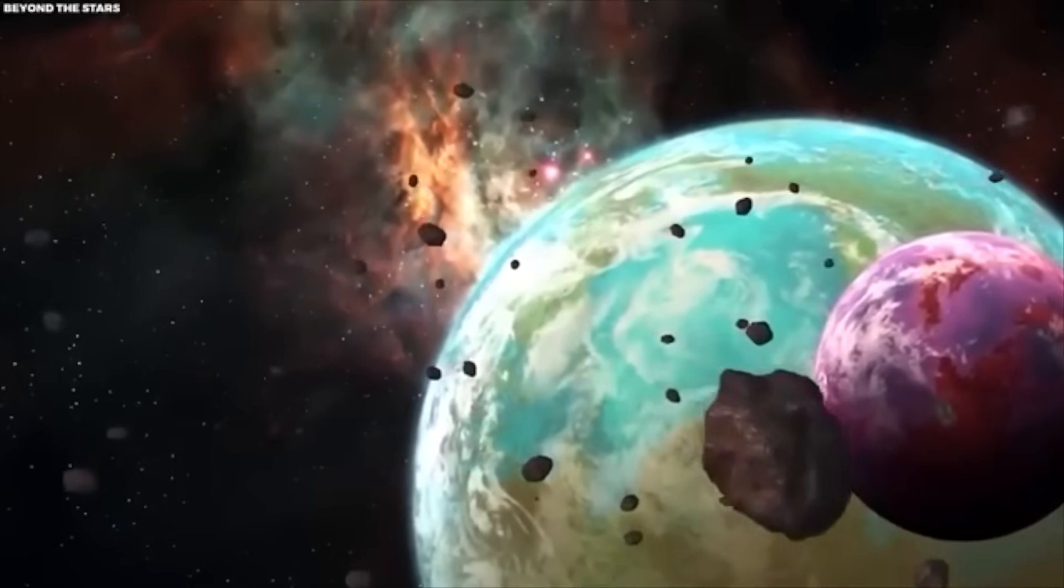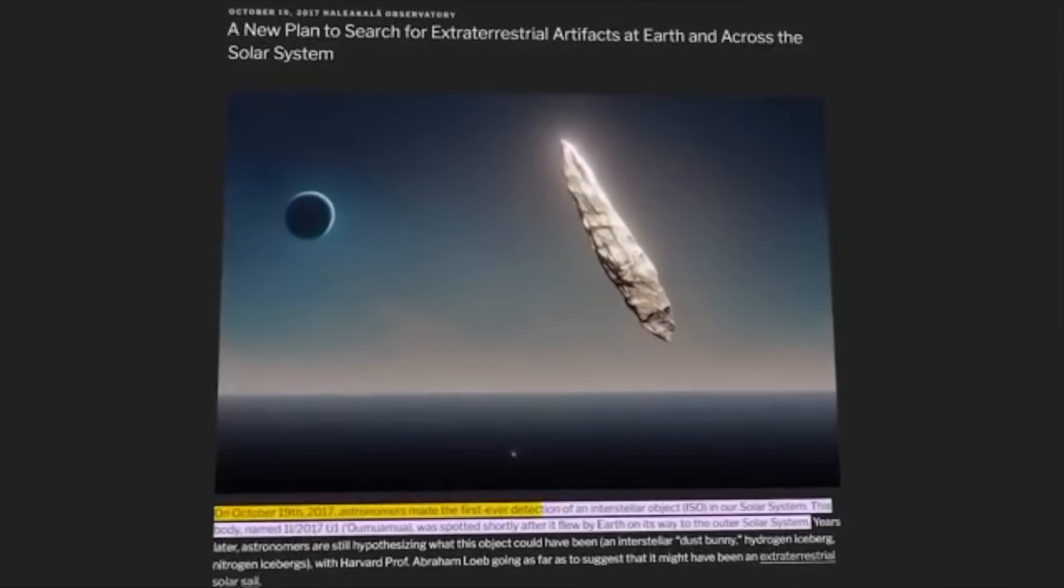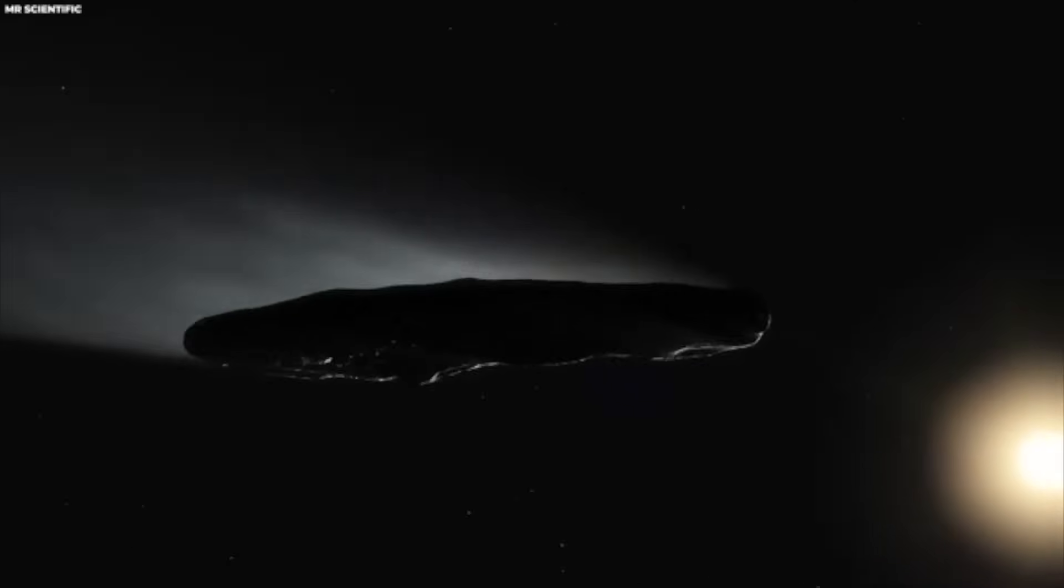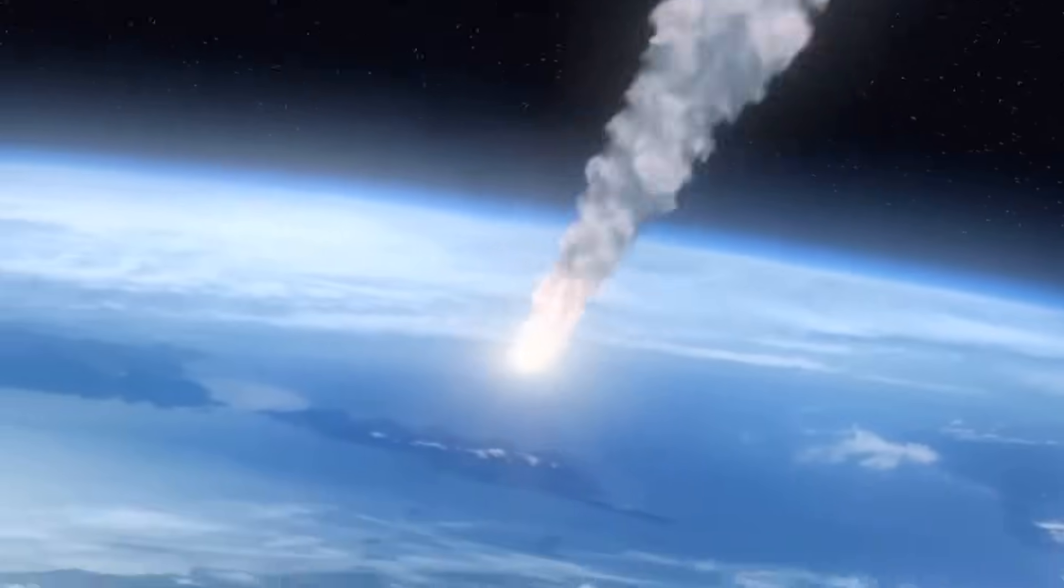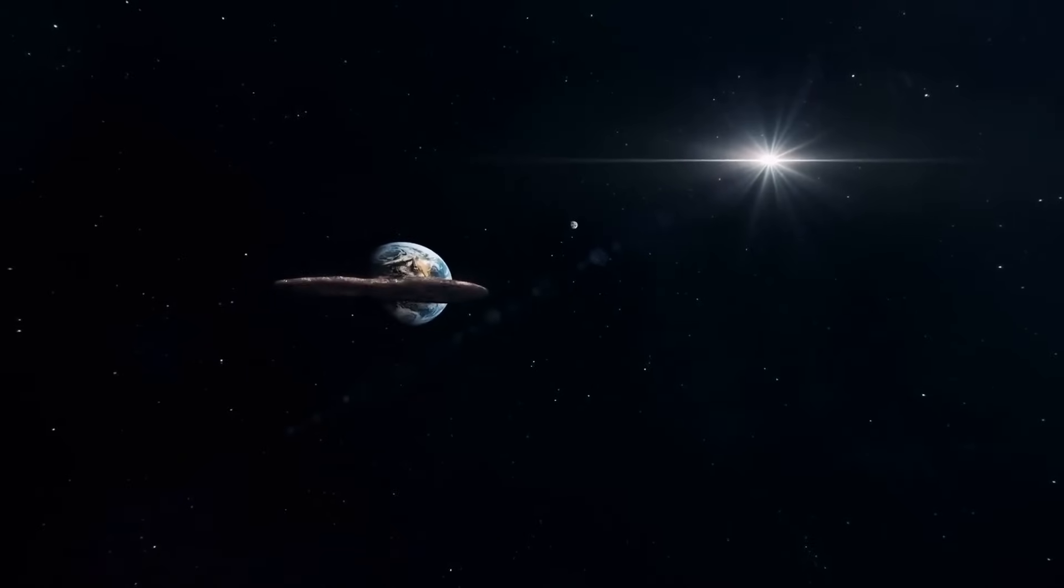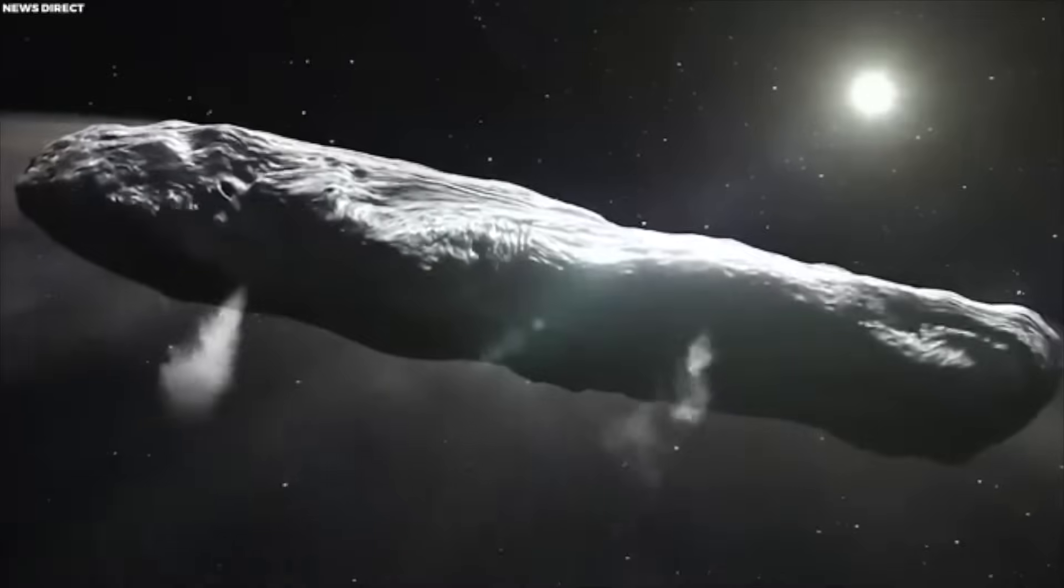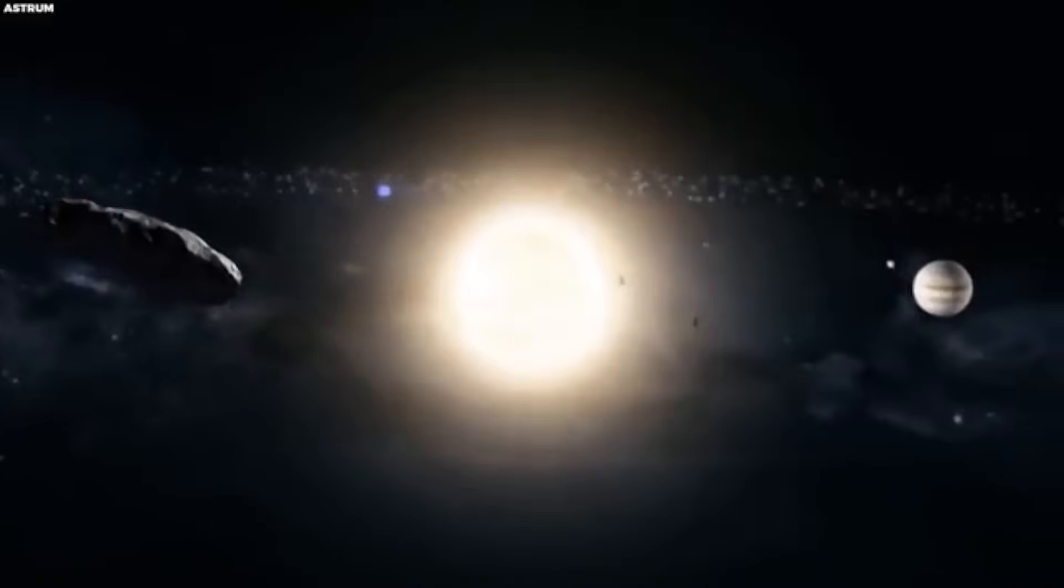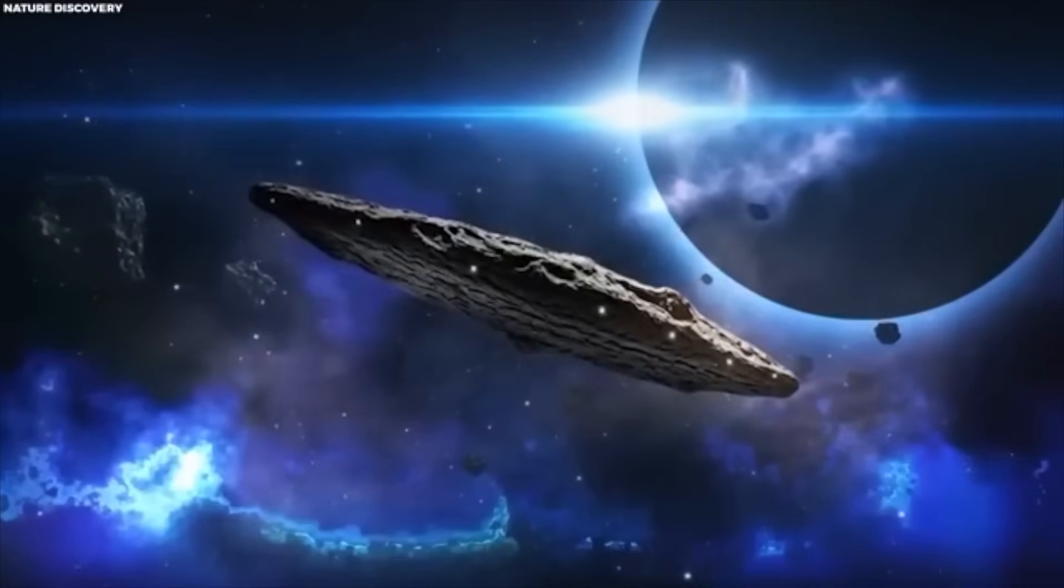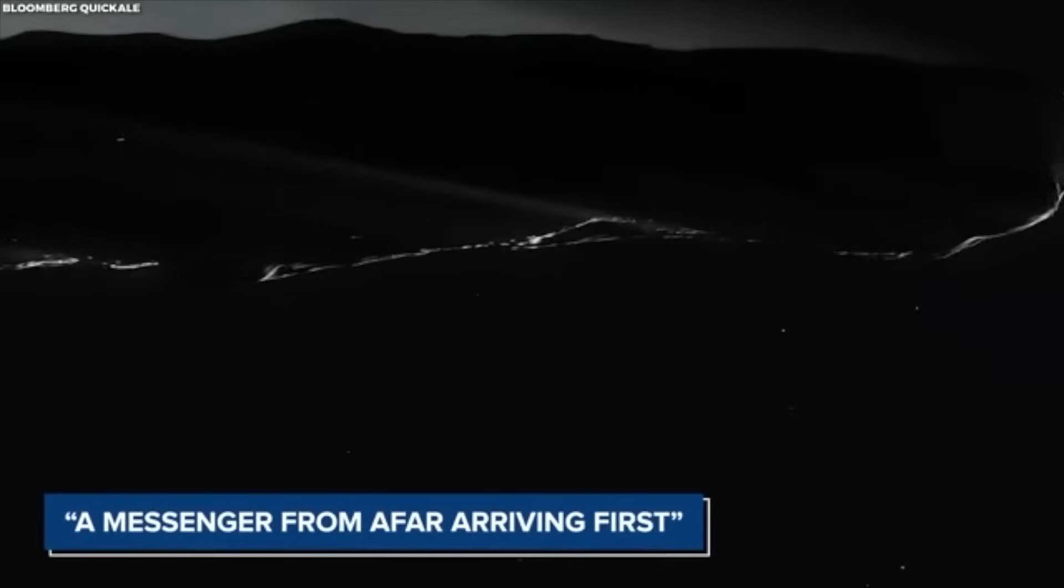Before delving deeper into the secrets potentially unlocked by these unveiled images, it's pivotal to appreciate the hypnotic allure of Oumuamua itself. On the 19th day of October in 2017, the skies above the Haleakala Observatory in Hawaii bore witness to a discovery that was nothing short of revolutionary. Initially, the object was believed to be either a comet or an asteroid. Still, as further analysis was conducted, it became evident that Oumuamua was not just another celestial body. It was identified as the very first interstellar object detected within our solar system's bounds, earning it the Hawaiian name Oumuamua, which translates to a messenger from afar, arriving first.